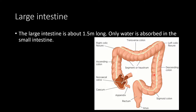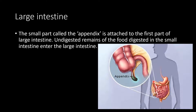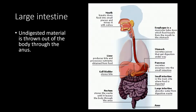Now let us understand about the large intestine. The large intestine is about 1.5 meters long. Only water is absorbed in the large intestine. The small part called the appendix is attached to the first part of the large intestine. Undigested remains of food enter the large intestine and undigested material is thrown out of the body through the anus.